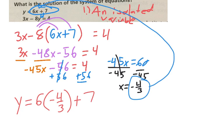yes, 6 times negative 4 over 3, which is negative 12, plus 7, which means y equals negative 5? Yes.